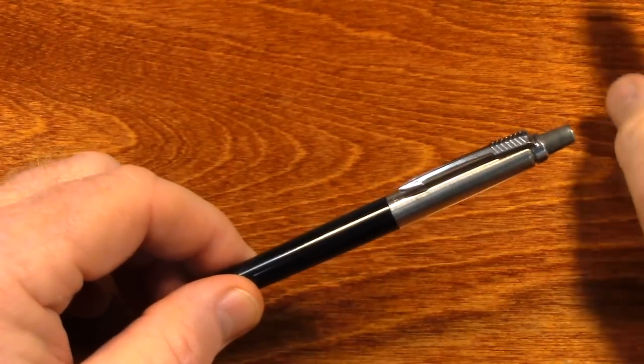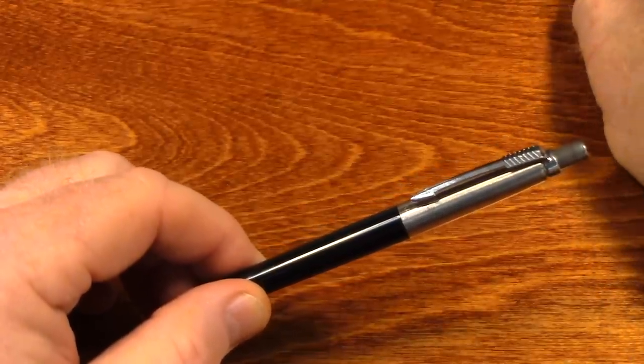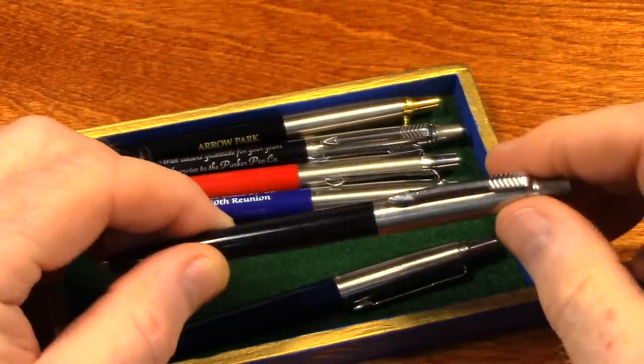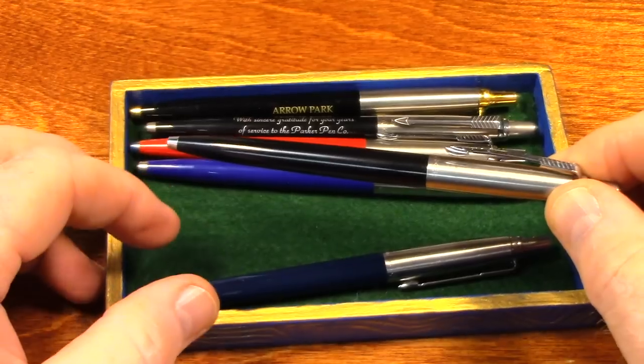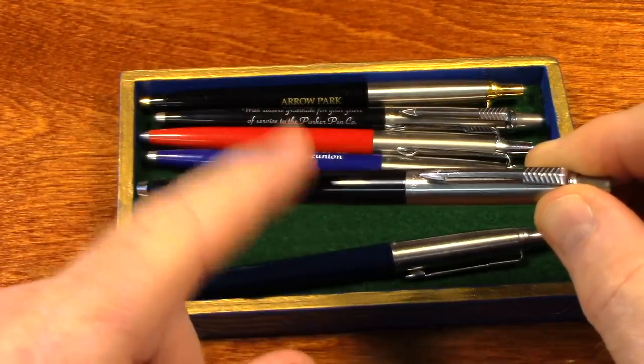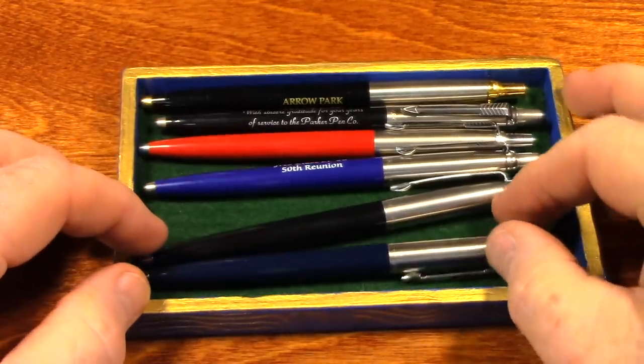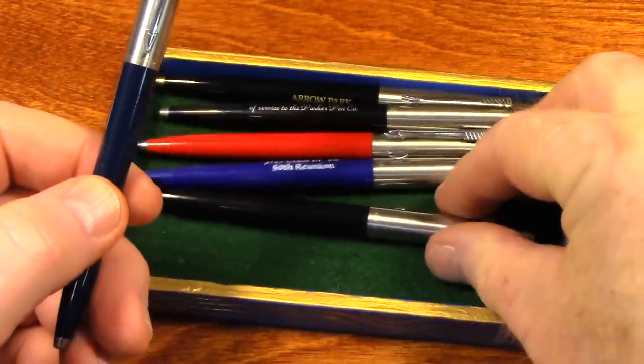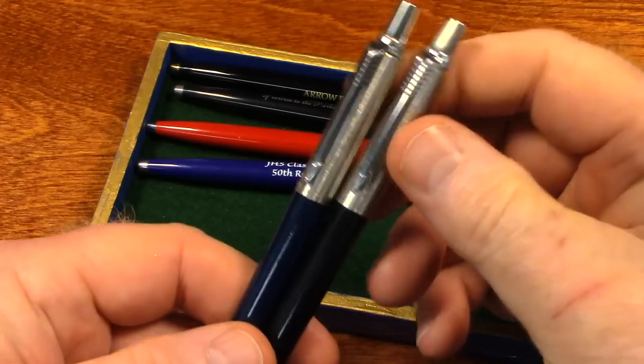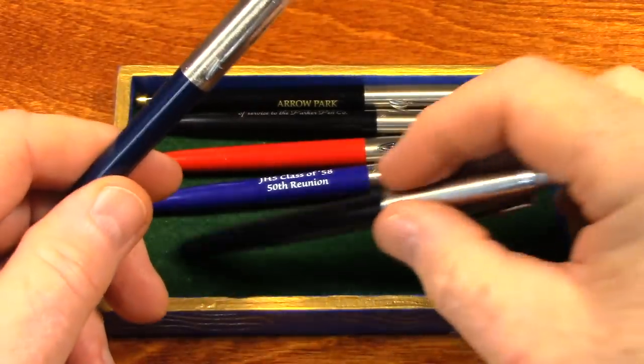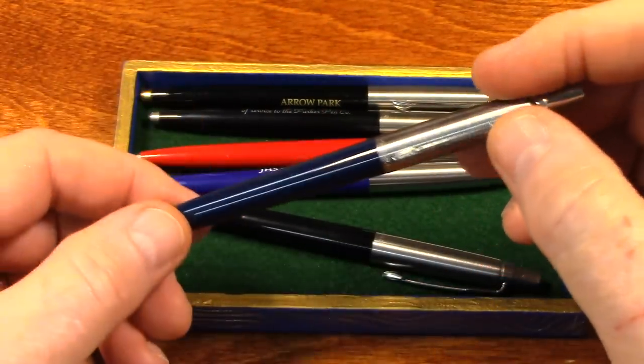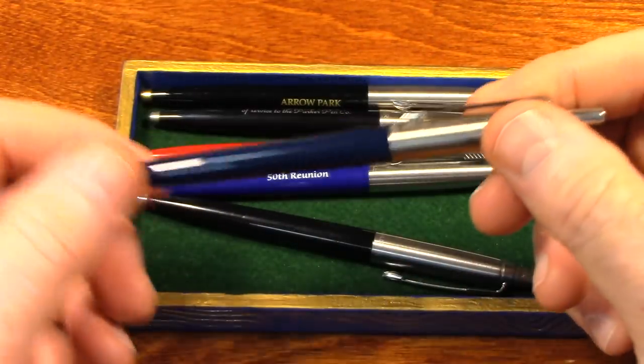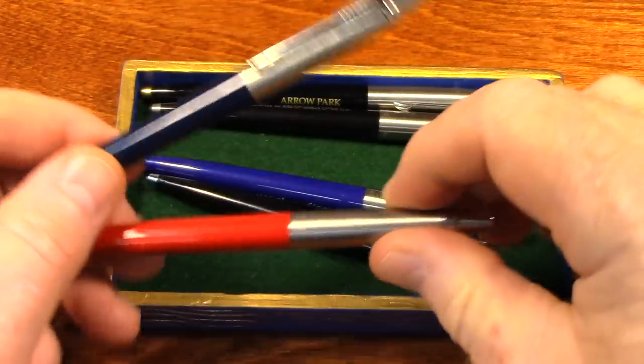Parker Jotter, it's a workhorse of a pen. I think these were first introduced in 1954, 53, 54, somewhere around there. And they made them for the first couple of years with nylon barrels before they switched to plastic. At some point, they had a version, I think these are all standards. They had a version that was a little bit fatter. I don't think it lasted very long, but nonetheless it did exist.